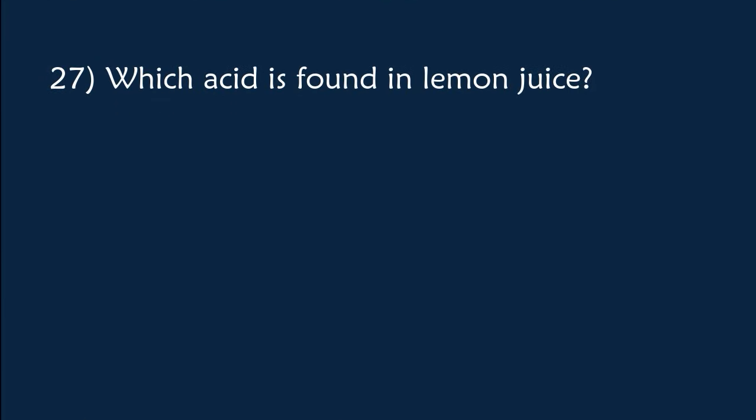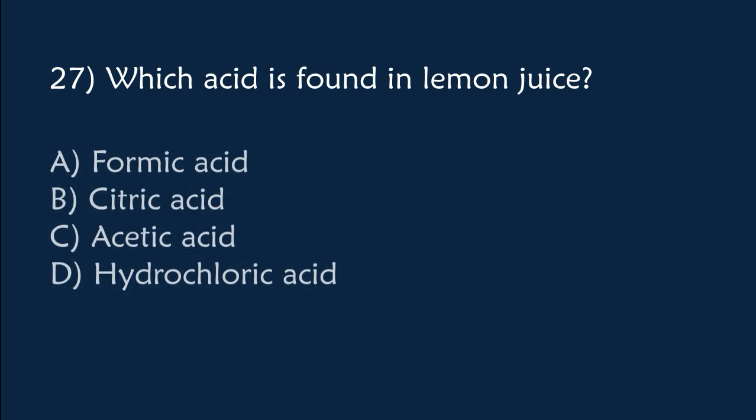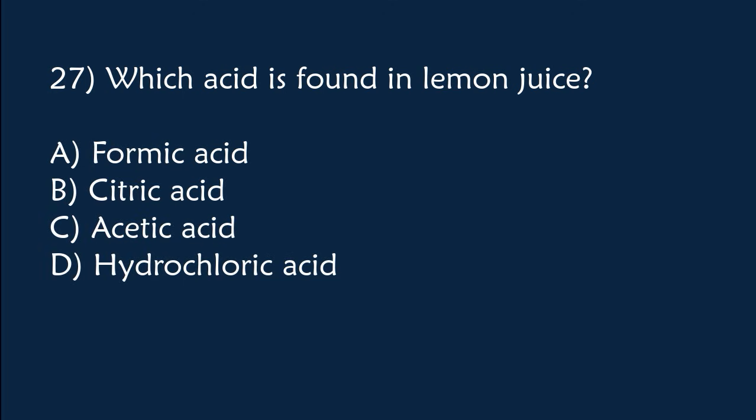Which acid is found in lemon juice? A) Formic acid, B) Citric acid, C) Acetic acid, D) Hydrochloric acid. The correct answer is Option B, citric acid.